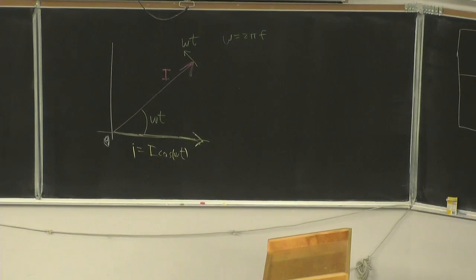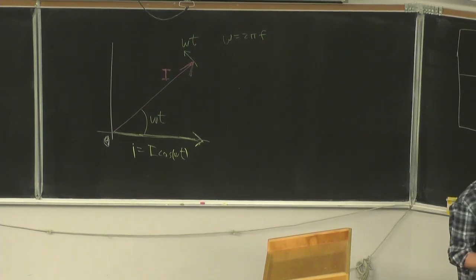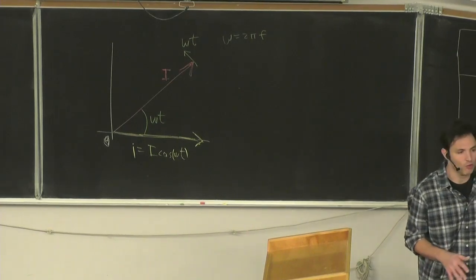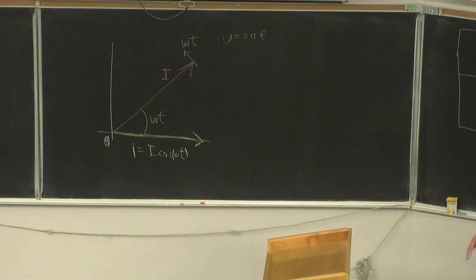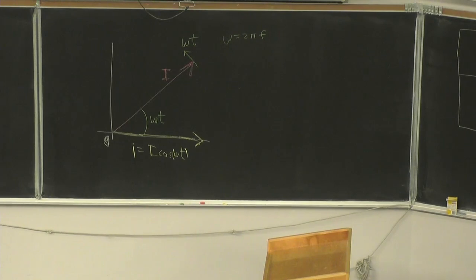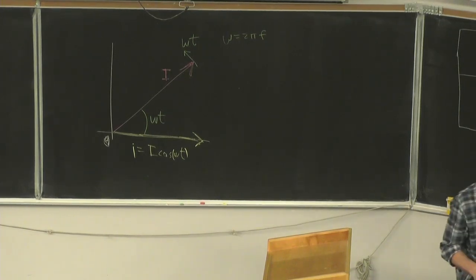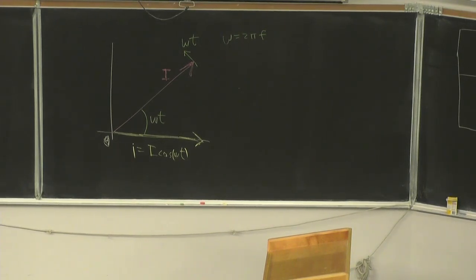What is a phasor? A phasor isn't a real physical quantity with a direction in space, like velocity or electric field. It's a geometric entity that helps us describe physical quantities that vary sinusoidally with time — it's much like a wave function in quantum mechanics. Here we'll use phasors to add sinusoidal voltages and currents vectorially. Combining sinusoidal quantities with phase differences involves vector addition.